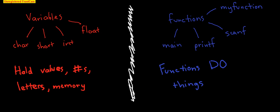There are different types of variables. You've got chars, shorts, ints, floats, and the list goes on and on. Variables hold values — they can hold numbers, letters, they just generally store memory. It's just like in math or algebra when you say x equals 10, y equals 20. They are variables. They hold numbers that can vary.